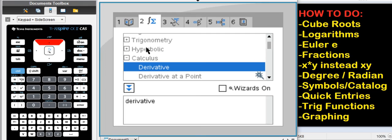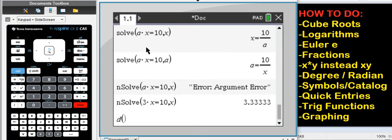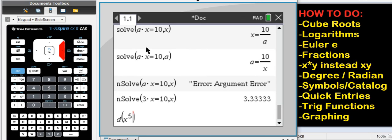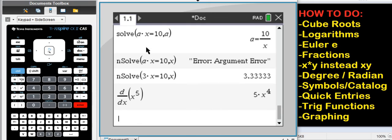Say you know calculus. You want to find a derivative. You just select that command, d for derivative, and then type in x to the 5, for example, comma x as your variable, and you get your correct derivative.